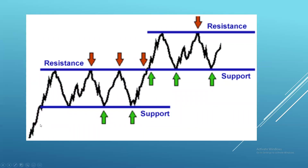Looking at the diagram: do we want to buy at resistance? No, because resistance hasn't broken and the stock starts falling. We buy on support, sell at resistance — and if support holds, we buy on support again and sell at resistance again. Eventually if resistance breaks, we hold or enter on the breakout. What we don't want is to buy in the middle hoping it pops back up — in the middle the stock could go either direction.